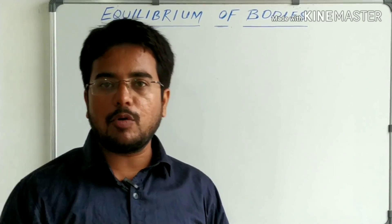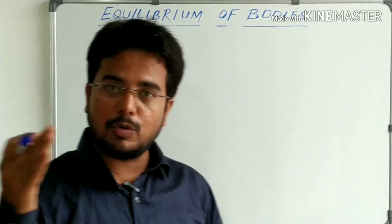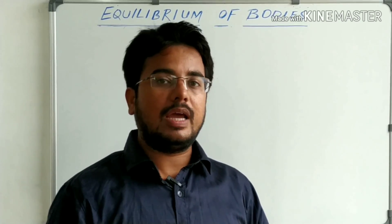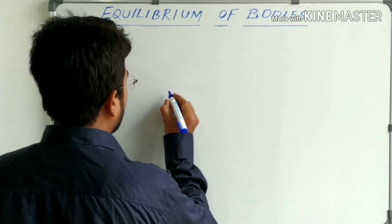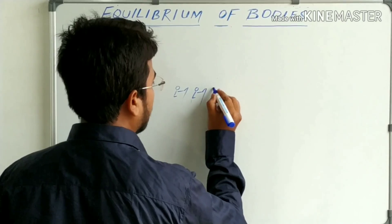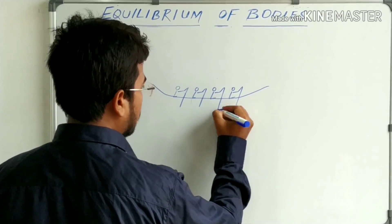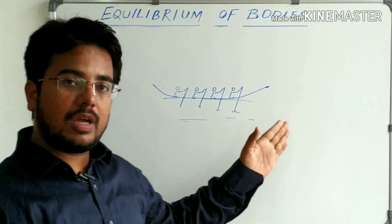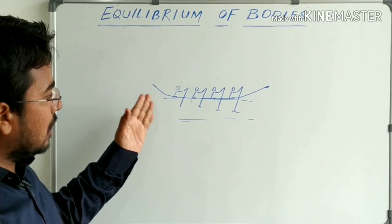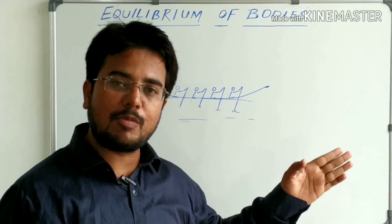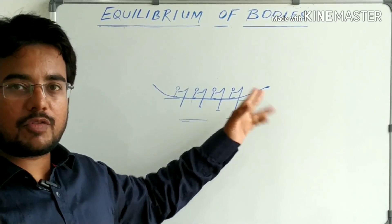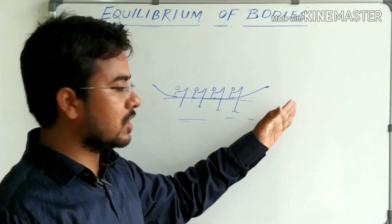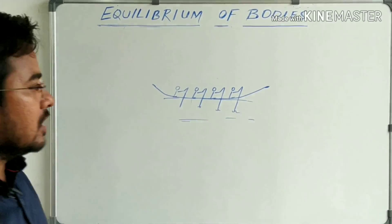The second kind of equilibrium is dynamic equilibrium. If, under the influence of a number of forces, a body is in the state of constant motion and is not changing from motion to rest, then we say it is in dynamic equilibrium. For example, consider a boat being rowed by a number of people. Under the influence of force, the boat is in constant motion and not changing from motion to rest, so we say the boat is in dynamic equilibrium.